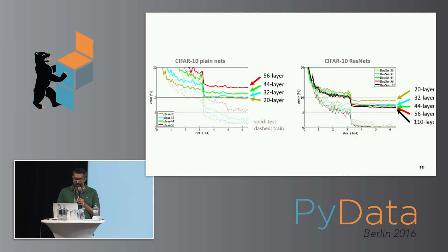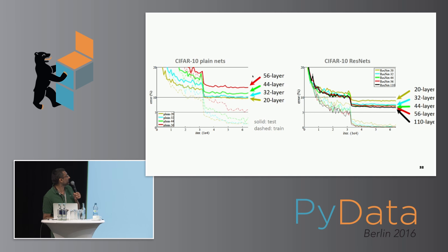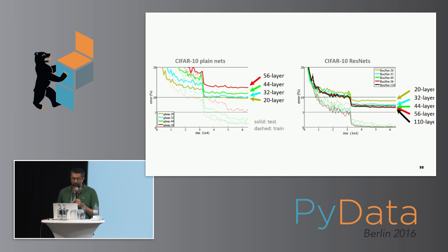Here are the results for the CIFAR-10 data. On the left are results of the plain network, which has the problem you saw before — as we increase the layers, both test and training error increase. On the right are the residual networks, which can be trained without difficulty from 20 to 110 layers in this experiment, showing both lower training error and lower test error.